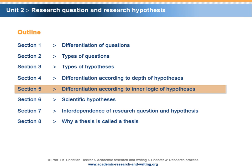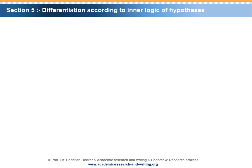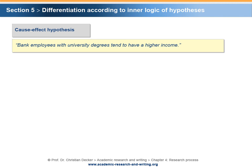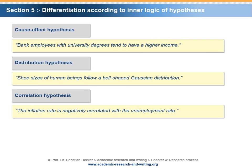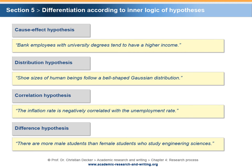Section 5: Differentiation according to inner logic of hypotheses. A cause-effect hypothesis would be: bank employees with university degrees tend to have a higher income. A distribution hypothesis would be: shoe sizes of human beings follow a bell-shaped Gaussian distribution. A correlation hypothesis would be: the inflation rate is negatively correlated with the unemployment rate. A difference hypothesis would be: there are more male students than female students who study engineering sciences.